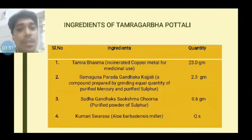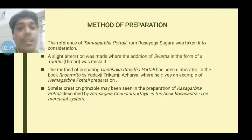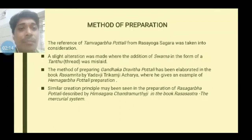The granting medium is Kumari Swarasa or Aloe vera juice. The method of preparation is similar to the Hemagarpa Portali method described in Rasamrata of Yadavji Trigamji Acharya — that is the Gandhagadravita method. A similar reference is also obtained while preparing Rasagarpa Portali, and the reference is found in Ras Shastra: Book of Mercurial System, compiled by Dr. Himsagar Chandra Murthyji.